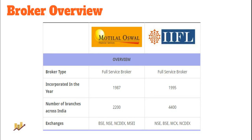Starting with company backgrounds: Motilal Oswal and IIFL are both full-service stock brokers. Motilal started in 1987 while IIFL began in 1995. Today Motilal Oswal has 2,200 branches, whereas IIFL is spread across 4,400 locations through its sub-broker and franchise offices in India. Both brokers are members of BSE, NSE, and commodity exchanges. On offline presence, IIFL definitely scores an advantage over Motilal Oswal.